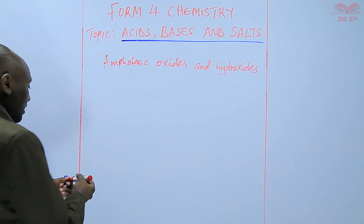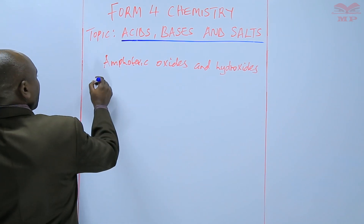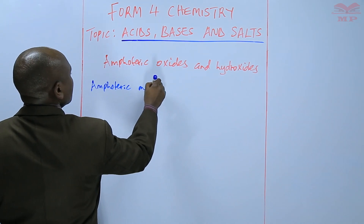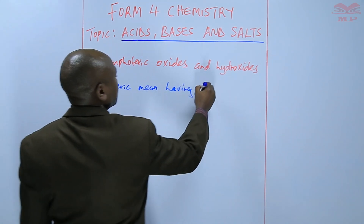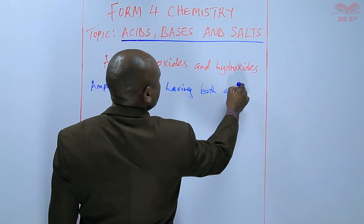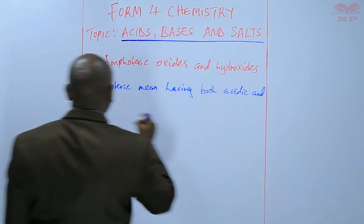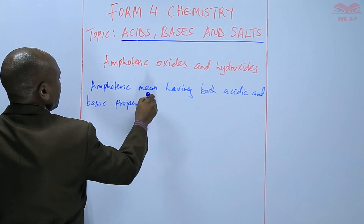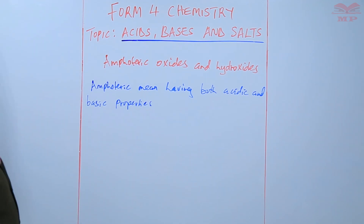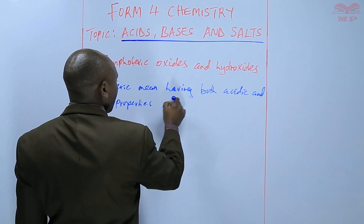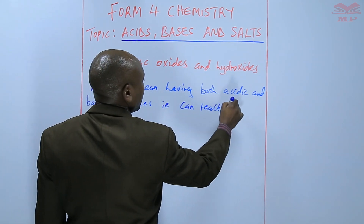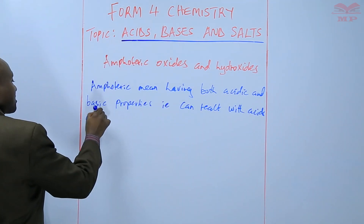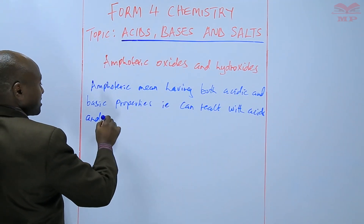So the term amphoteric means having both acidic and basic properties — that is, the substance can react with both acids and bases.